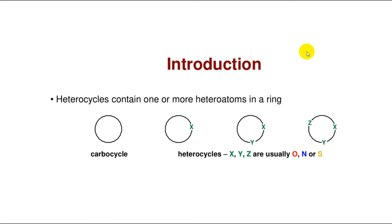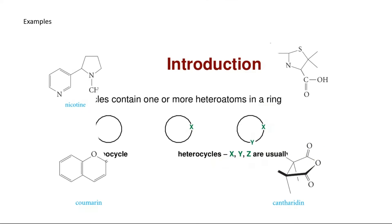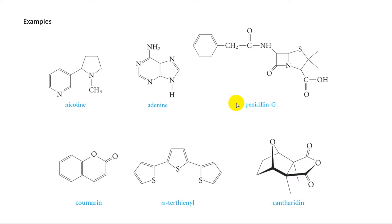Heterocyclics have interesting electronic, mechanical, or biological properties. Heterocyclics contain one or more heteroatoms in a ring. These heteroatoms — X, Y, Z — are usually oxygen, nitrogen, or sulfur. Here are some examples of heterocyclic compounds that are found in nature.